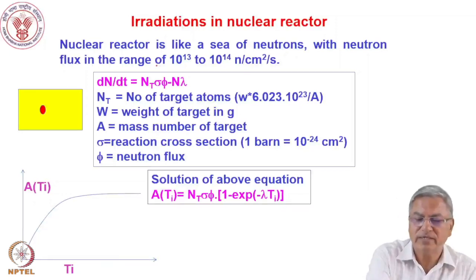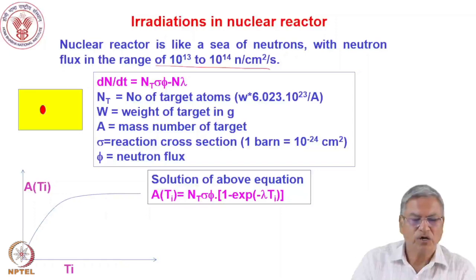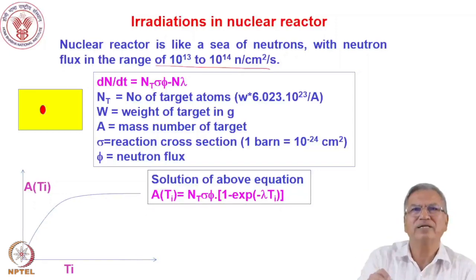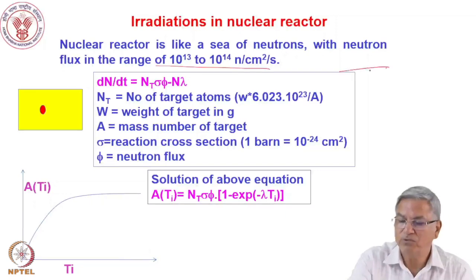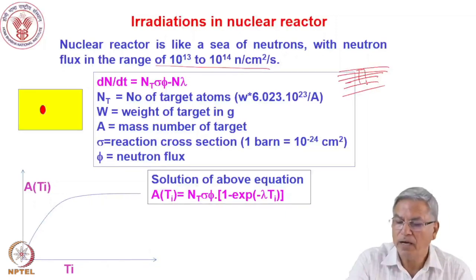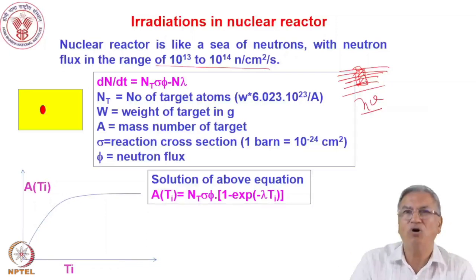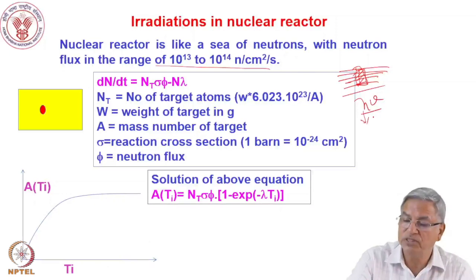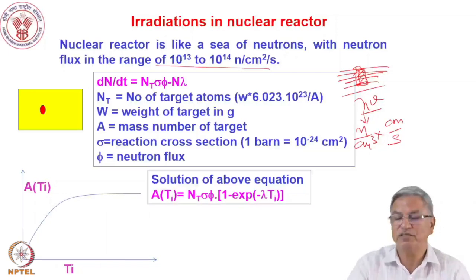How do you define how many neutrons are there in the reactor? It is defined in terms of flux. When you have neutrons in the reactor, we say this many neutrons are passing through one centimeter square per second. That is called the flux. It is also called NV in reactor physics — N is the number of neutrons per cc and V is its velocity. So neutrons per centimeter cube times centimeter per second gives neutrons per centimeter square per second.